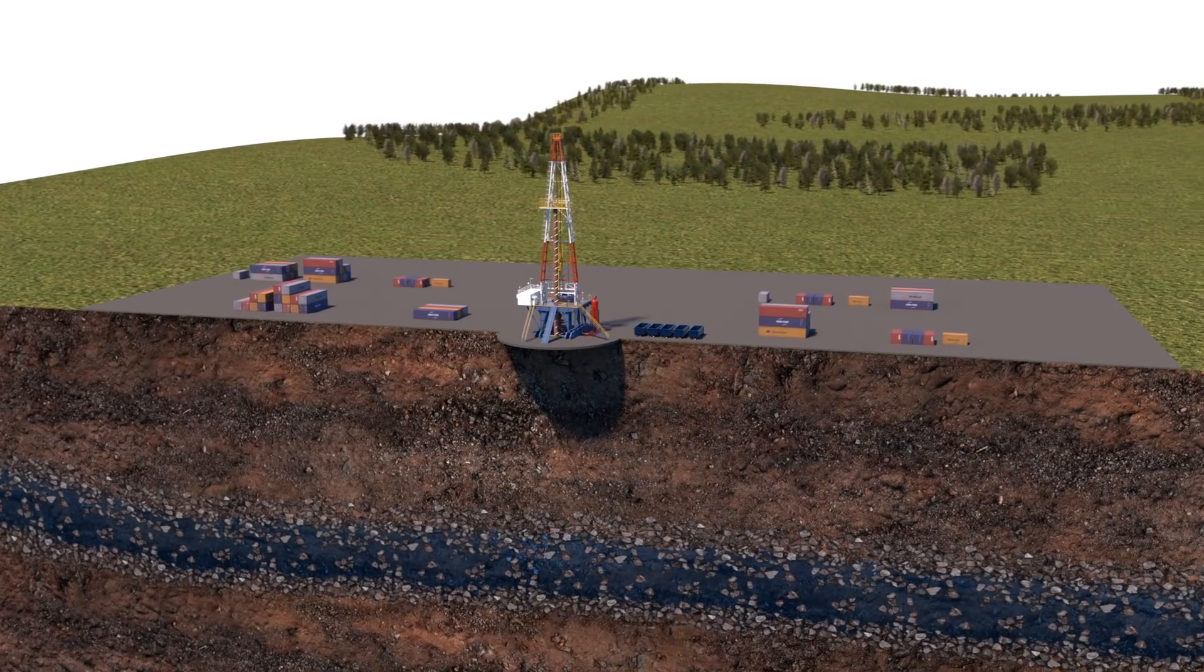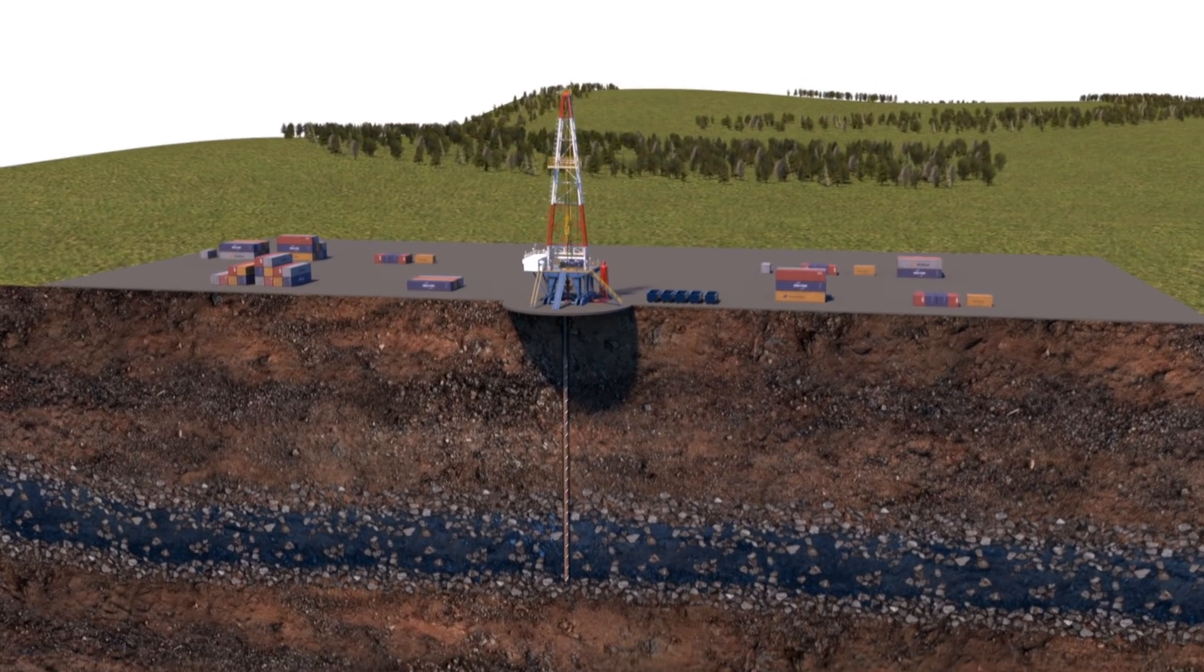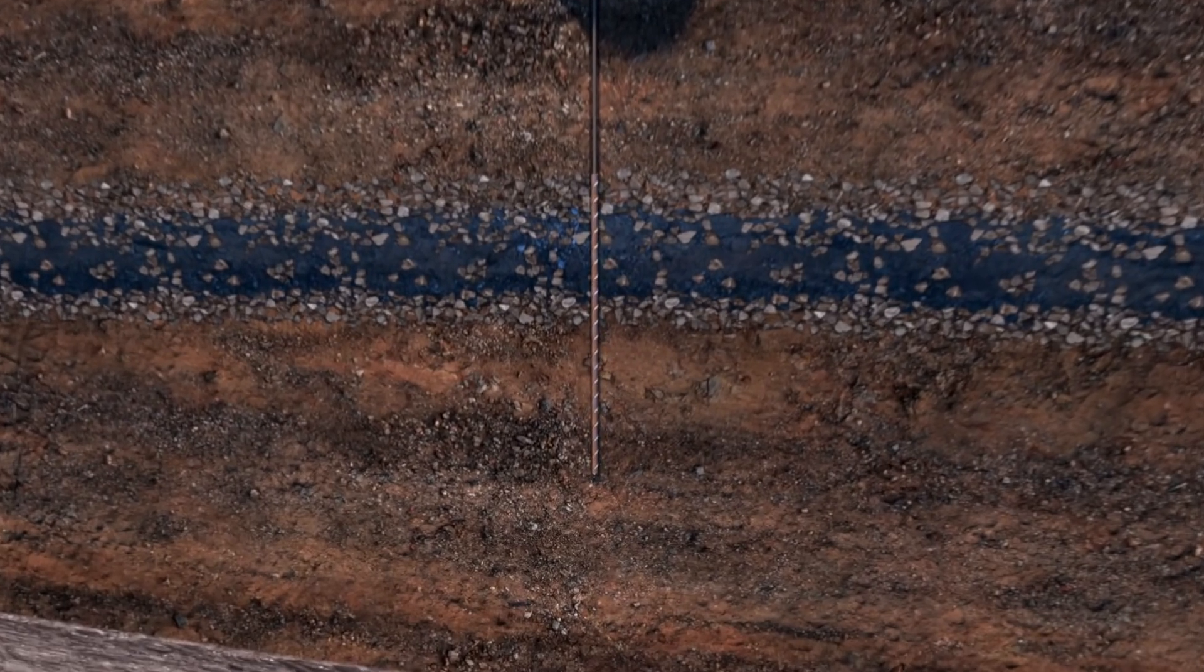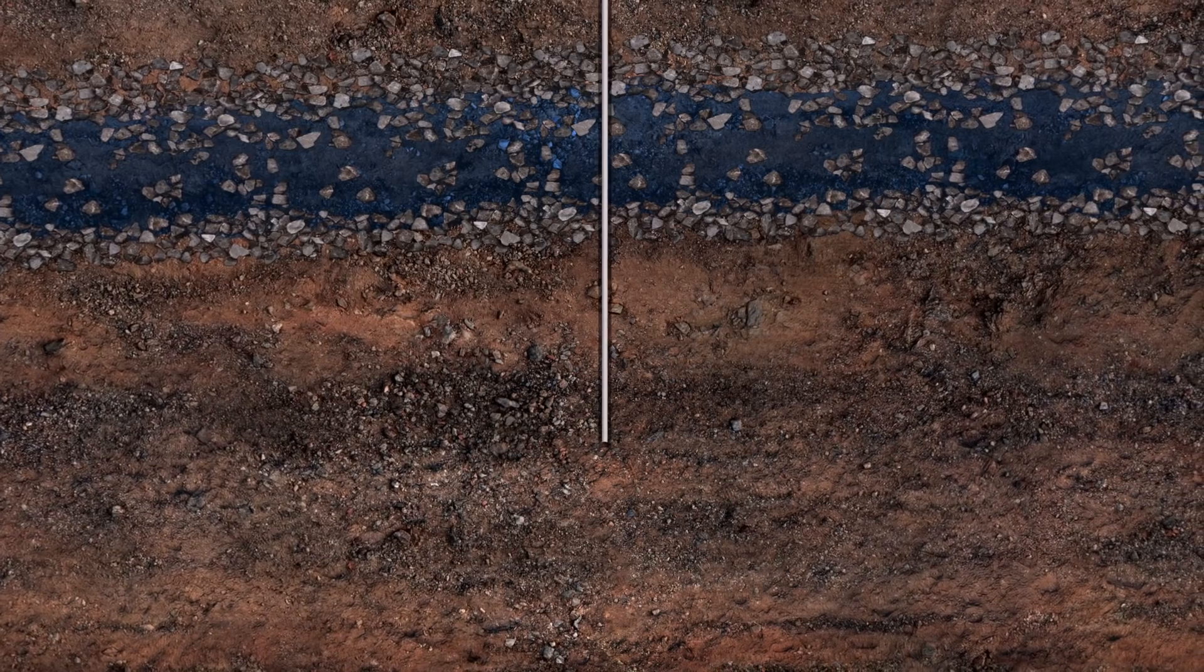We start by drilling a larger diameter hole. For this video, we assume it is 91 centimeters in diameter and several hundred meters deep. A steel pipe, called a surface casing, is inserted into the hole.